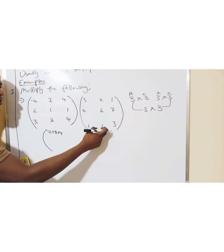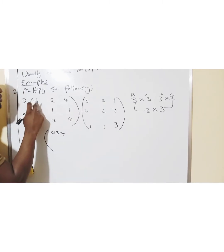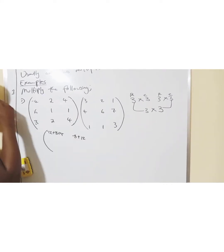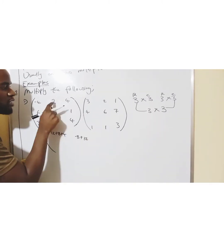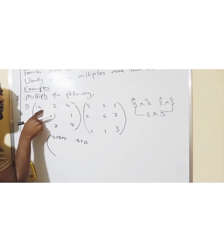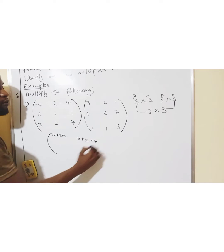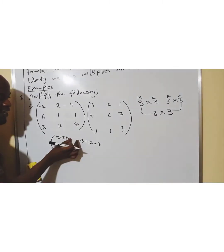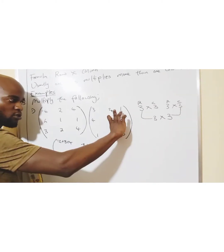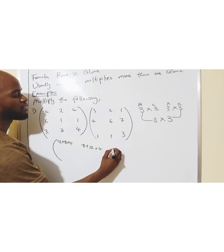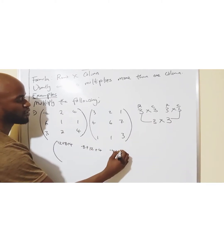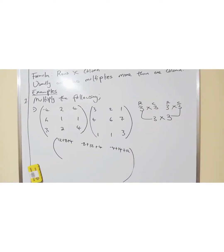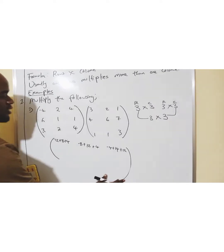This same row will multiply this column — usually one row multiplies more than one column. So, negative 4 times 2 is negative 8. 2 times 6 is 12. Have you noticed that each number is multiplying its own number? You won't see this 2 multiplied by 2 because this 2 has been gotten by 4. Then 4 times 1 is 4. The same row must multiply this column. So, after I'm done with this column, I give space and go to another column.